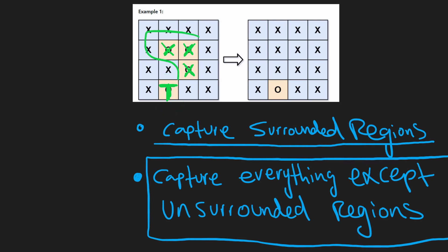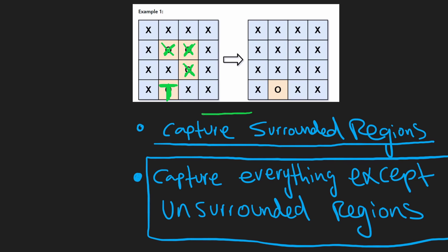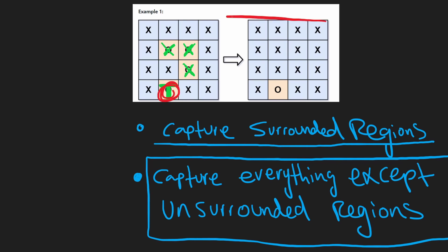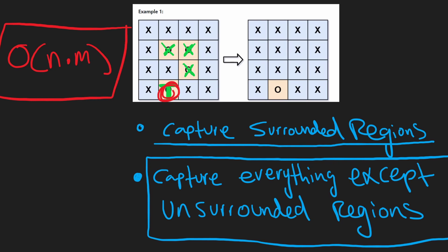First we marked T's, now we're marking X's. The last thing we have to do: take a look at the board — the unsurrounded regions were changed to T's, but we still want them to be O's. So again we're going to do a double for loop scan through the entire grid. Anytime we see a T, we change it back into an O, and then we have the desired board. The overall time complexity is O(N × M), where N and M are the dimensions of the board.